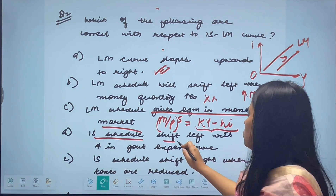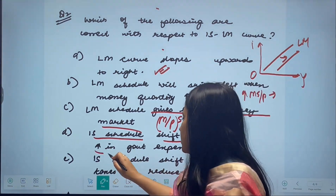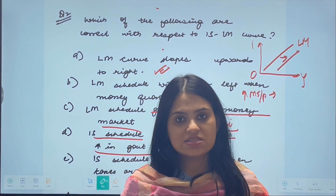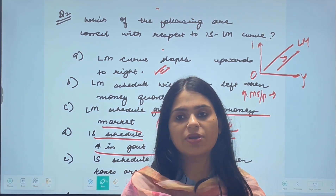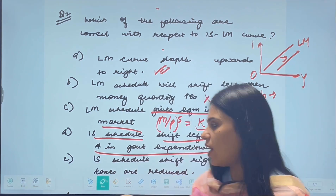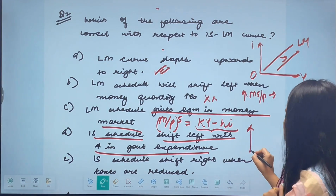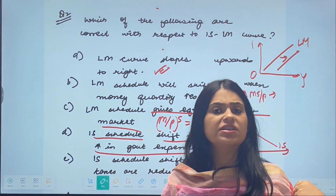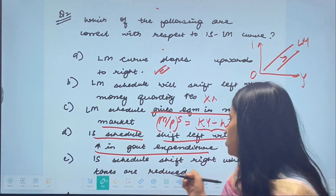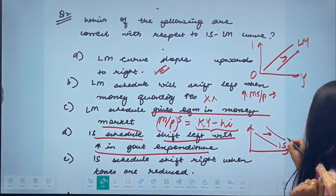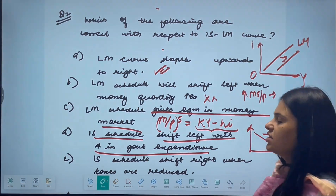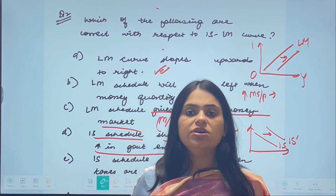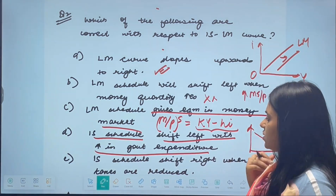The fourth option says the IS curve shifts to the left with an increase in government expenditure. The IS curve shows equilibrium in the goods market and slopes downward. When government expenditure increases, the IS curve shifts to the right, not the left. So the correct statement should be that IS curve shifts rightward with increased government expenditure — making this option incorrect.